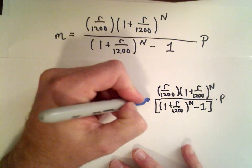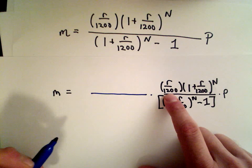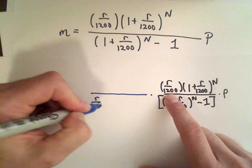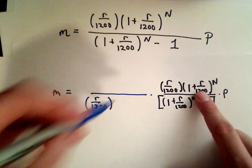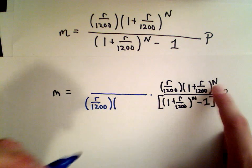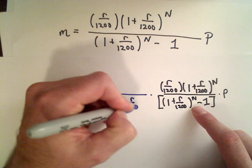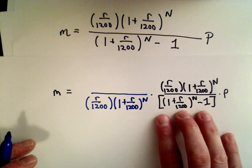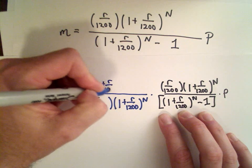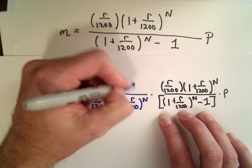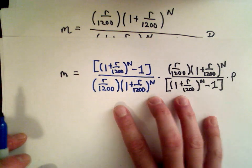Well, all I want to do is just multiply so that I can get rid of some of this stuff. Well, I've got an R over 1,200 in the numerator. If I put one in the denominator, when I multiply, I would be able to cancel. The same thing, to get rid of this 1 plus R over 1,200 raised to the power of N, I would need a 1 plus R over 1,200 raised to the power of N. And to get rid of the denominator, I would need 1 plus R over 1,200 raised to the power of N minus 1. And notice now everything on the right side is going to cancel except for P.